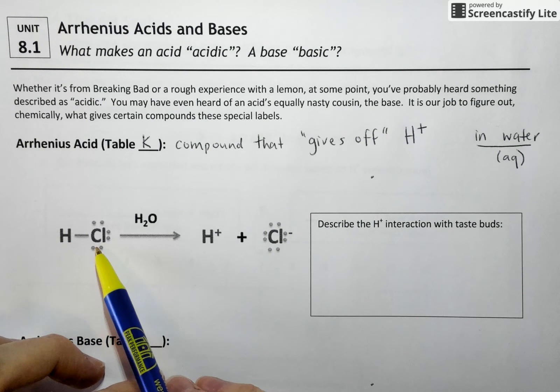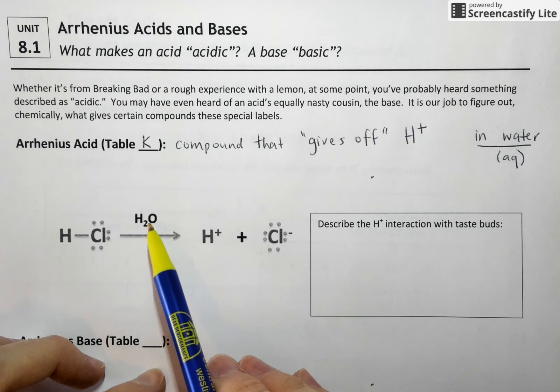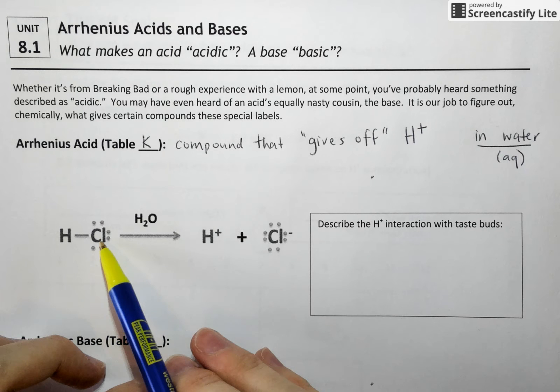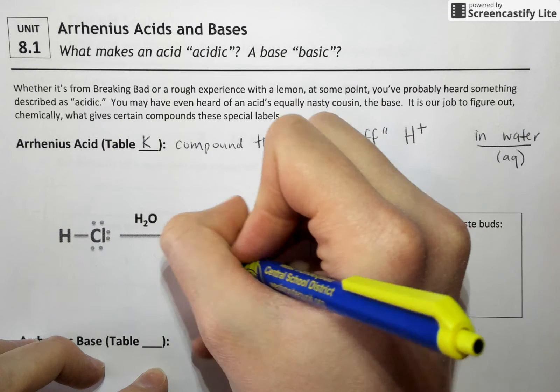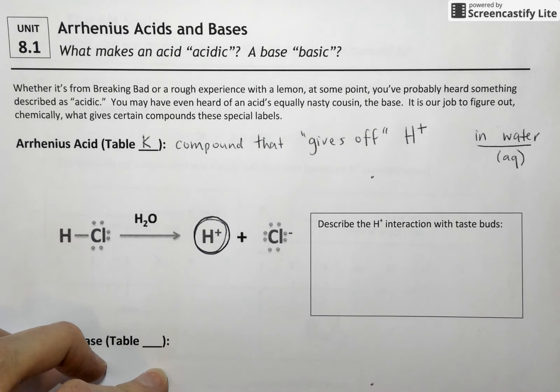We can kind of justify that looking at this equation right here. HCl, hydrochloric acid, is covalently bonded before it's put into water. There is no H plus ion present when H is bonded to Cl. Only when that HCl breaks apart into that H plus that Arrhenius was interested in do its acidic properties really shine through.